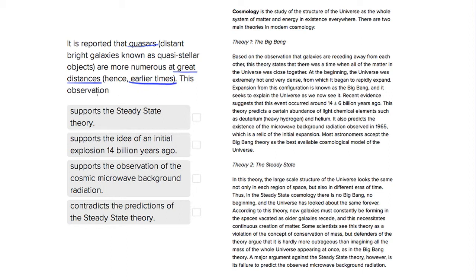So let's look at our choices. First choice, supports the steady state theory. But the steady state theory actually tells us the opposite. It tells us that the large scale structure of the universe looks the same, not only in each region, but also in different eras of time.